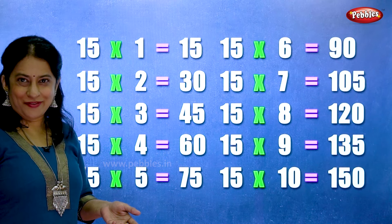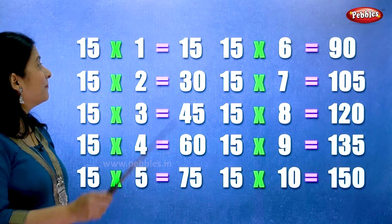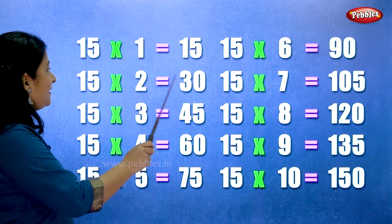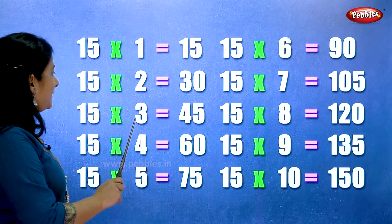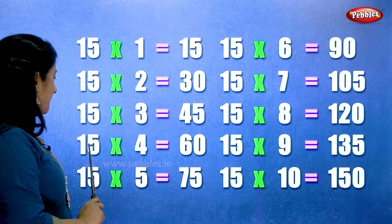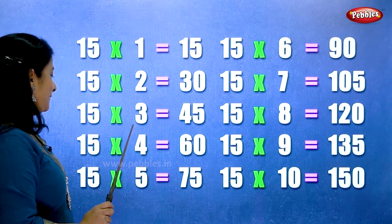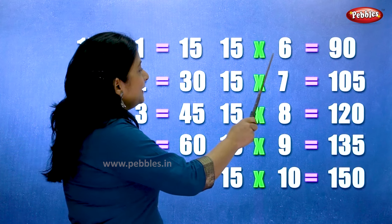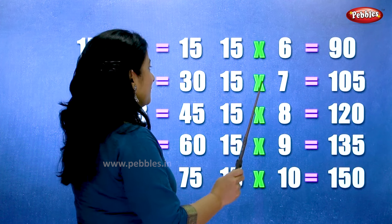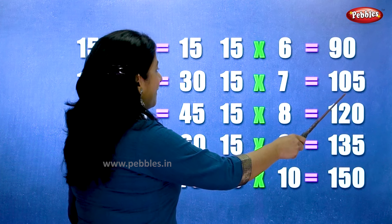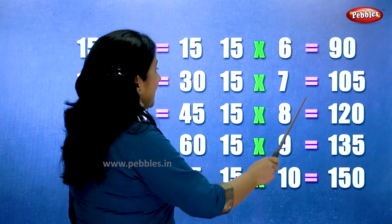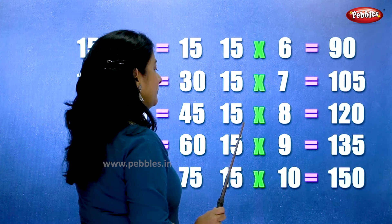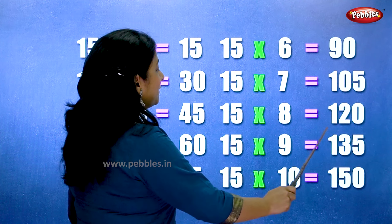Let's learn the table of fifteen one more time. Fifteen ones are fifteen. Fifteen twos are thirty. Fifteen threes are forty-five. Fifteen fours are sixty. Fifteen fives are seventy-five. Fifteen sixes are ninety. Fifteen sevens are hundred and five. Fifteen eights are one twenty. Fifteen nines are one thirty-five. Fifteen tens are one fifty.